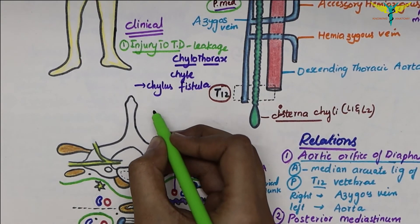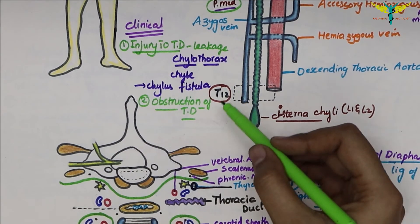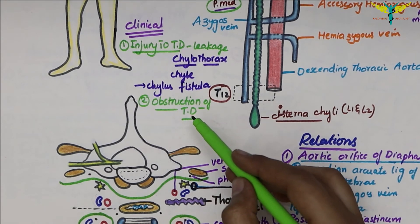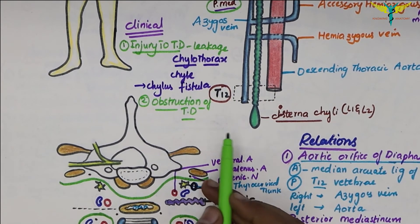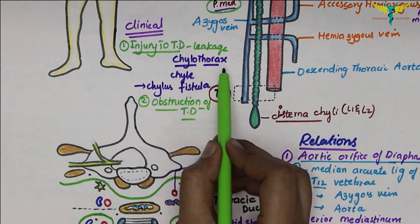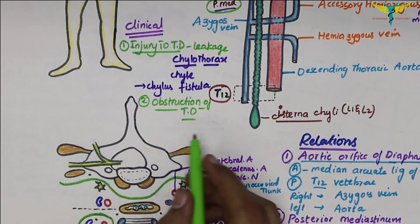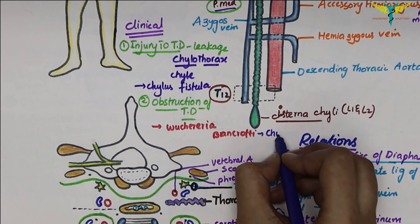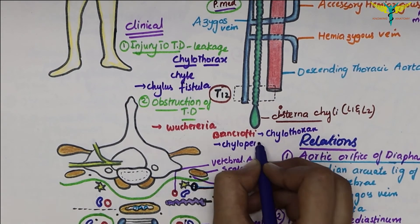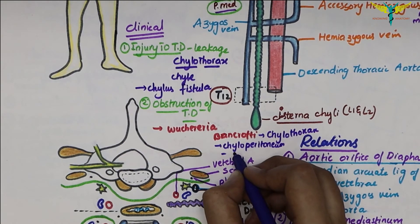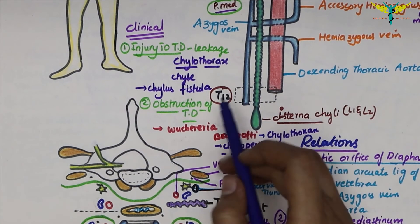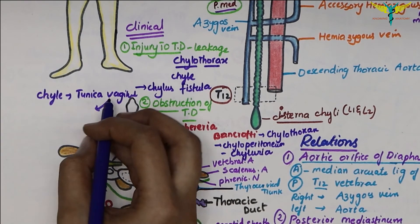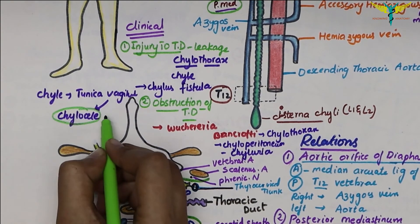The second clinical point is obstruction of the thoracic duct. In filarial infection by Wuchereria bancrofti, the thoracic duct is obstructed by microfilarial parasites, leading to widespread effects such as chylothorax, chyloperitoneum (chyle in the peritoneum), and chyluria. Additionally, accumulation of chyle in the tunica vaginalis is called chylocele — an important point to remember.